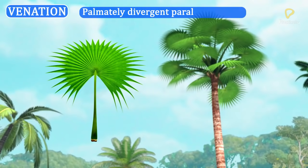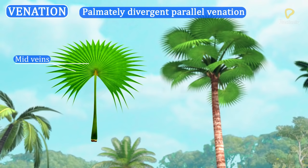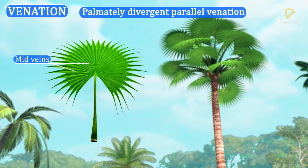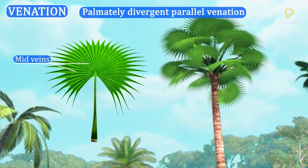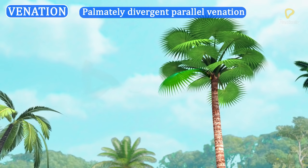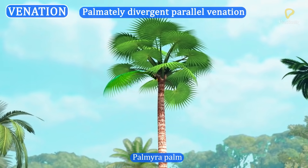Palmately divergent parallel venation: In this venation, many mid-veins arise from the base of the lamina and diverge towards the margin of the leaf blade, away from each other. This venation is seen in Borassus. Borassus is the generic name of the palmyra palm.